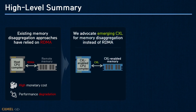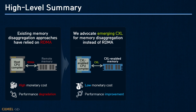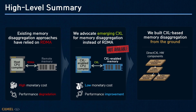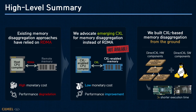Instead of RDMA, we suggest using CXL for memory disaggregation. CXL can reduce monetary cost and minimize performance degradation. However, CXL-enabled systems are not available yet. In this work, we designed CXL-based memory disaggregation called DirectCXL, which implements a CXL-enabled host, CXL memory device, and CXL switch. We also modified the Linux kernel to expose CXL-attached memory to user-level applications. Our evaluation using a real hardware prototype shows three times better performance than RDMA-based memory disaggregation.